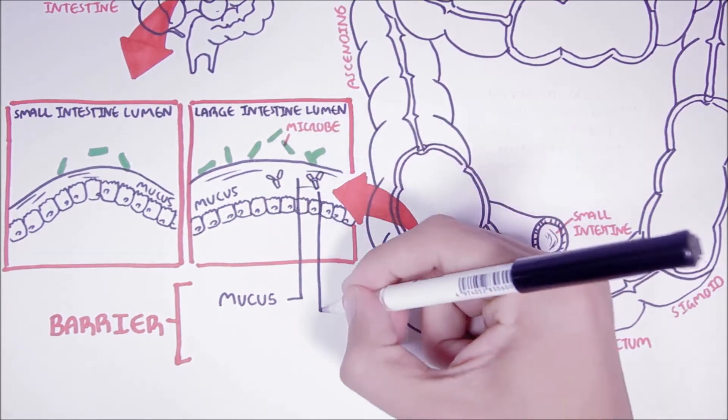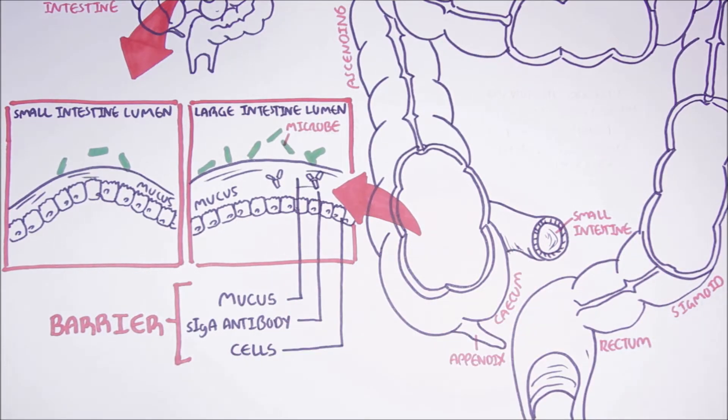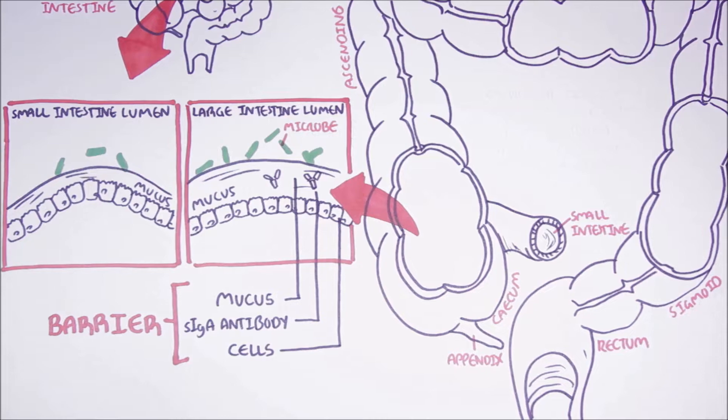Also, the antibodies that are part of the mucosal system, as well as the tight junctions between the intestinal cells, help in this respect. So there is a lot of barrier here, allowing these bacteria to live within us in a symbiotic mutualistic relationship.